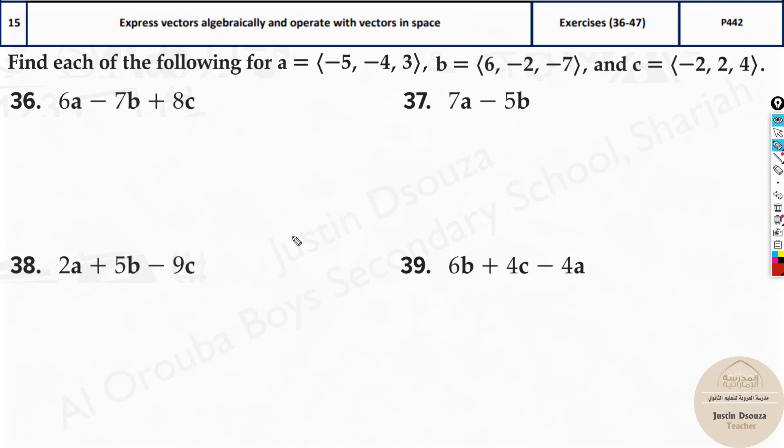You have been given the vectors, the component forms of vector a, b and c. You have to do scalar multiplication of vector a by 6, this minus 7 is multiplied with b and so on. So you can directly take a calculator and start multiplying them directly instead of writing it out.